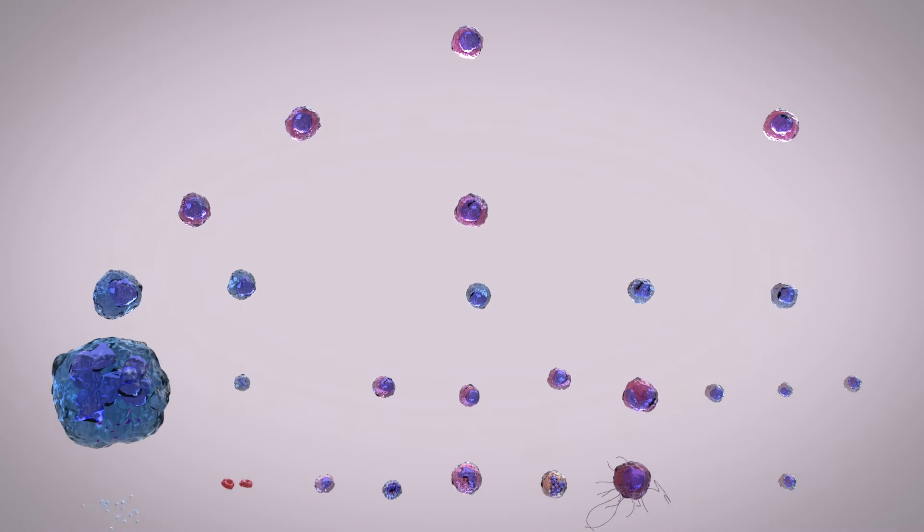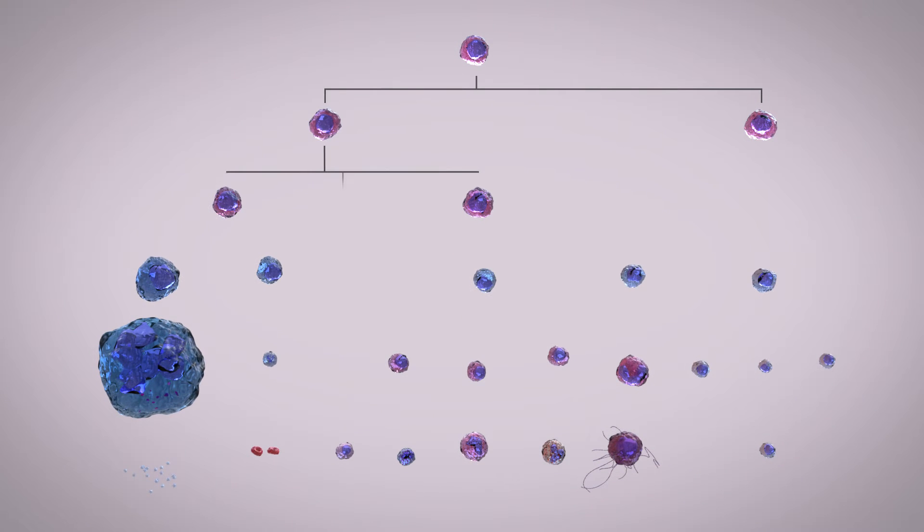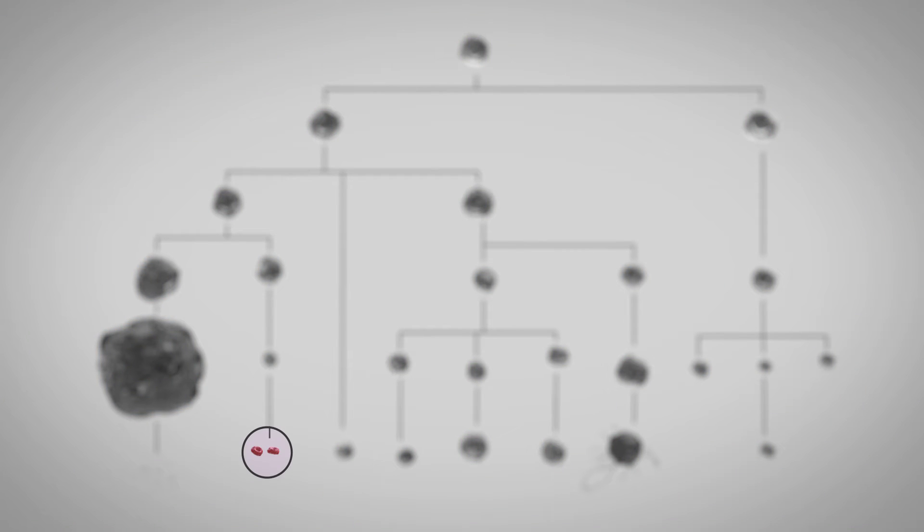Each stem cell can divide many times, creating copies that develop into different types of blood cell. This includes red blood cells that carry oxygen, and white blood cells that fight infections and protect against cancer.